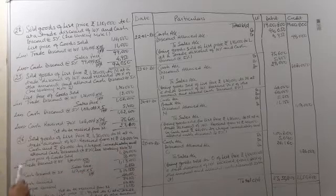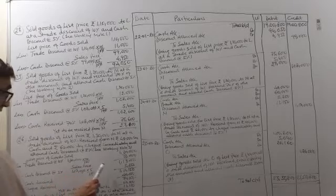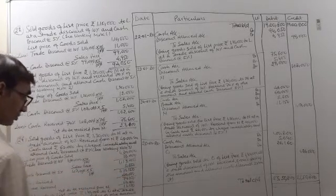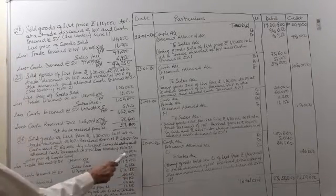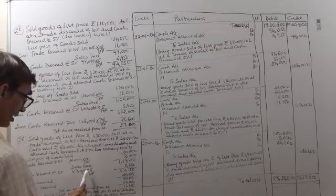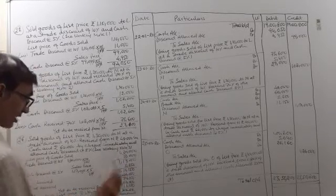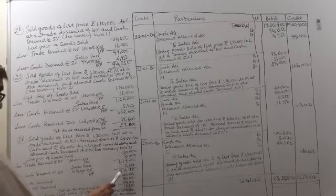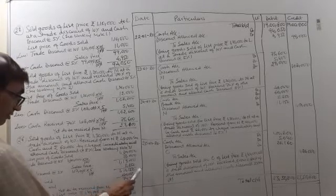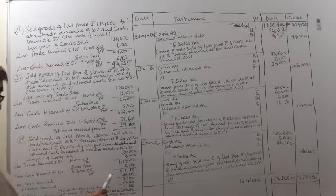Less trade discount at the rate 10%: 1,30,000 into 10 by 100 comes to 13,000, leaving a sales price of 1,17,000. Less cash discount at the rate 5%: 1,17,000 into 5 by 100 comes to 5,850. The balance left after cash discount is 1,11,150.